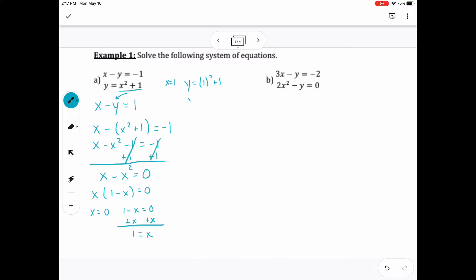So I get 1 and 0. Then I need to go pick one of the other two equations. I pick the bottom one to plug in those values that I found. So I get one answer of 1 comma 2.